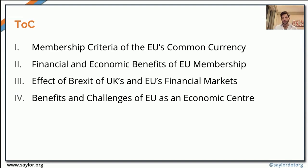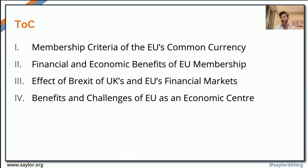What we're going to look into today is a specific example, a case study. We'll look at the EU and how the monetary union in the EU and how the European Union was able to implement a single market strategy and at the same time have a single currency. To do that, we'll first look at the membership criteria for the EU's common currency, then the financial and economic benefits of membership to the EU. After this, we'll look at Brexit and what kind of negative impacts Brexit has on the UK and the EU's financial markets, and then some of the benefits and challenges that the EU may experience as an economic center.